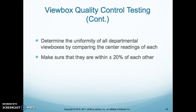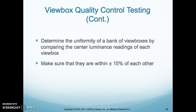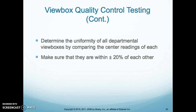If we're looking at all the view boxes in the department and comparing them, we take a reading from the center. Within the same view box, readings need to be within 10% of each other. If we're looking at two view boxes — say the one on the back wall and the other one on the wall — they need to be within 15% of each other. Then if we look at all the view boxes within our department, they need to be within 20% of each other.